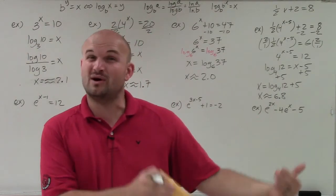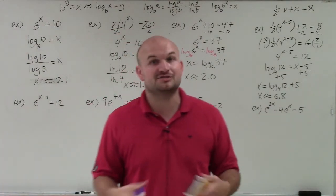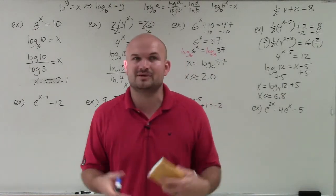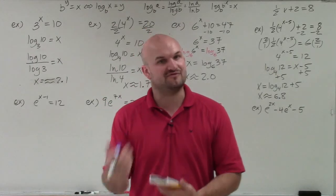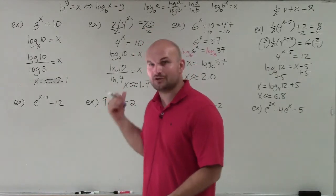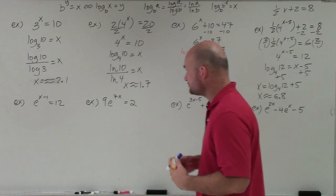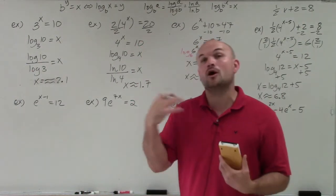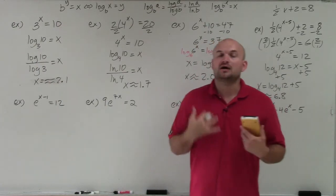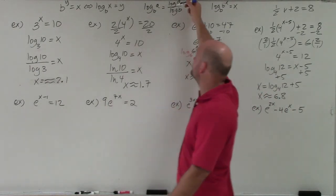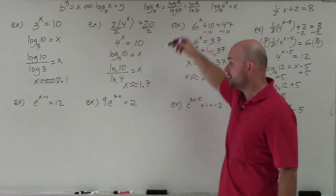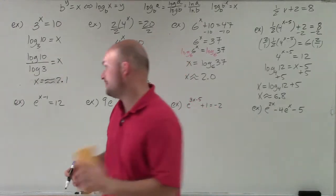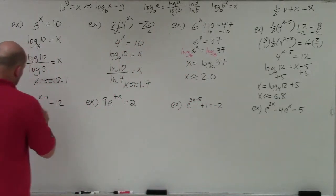The main choice is either using the one-to-one property or using your calculator. You can actually use your calculator for all problems, including those solvable by one-to-one property, but typically the one-to-one property is much faster and easier. Now we're going back to base e. Remember, with base e we're always going to be using the natural logarithm. Even though the change of base formula allows log or natural log, when we have base e, we use the natural log to evaluate.